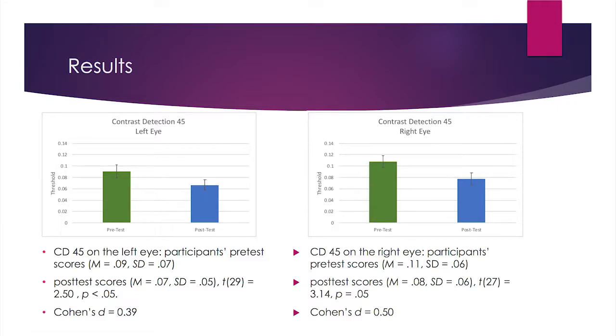These are what the results showed. As you can see, there was the left and the right eye, and there was pre- and post-test. Their threshold levels did go down. Remember, threshold level is the smallest amount of change required for you to notice a difference. So as they went from pre-test to post-test, they required less of a change to notice that there was a difference. Participants did show improvements in contrast detection as a result of the training — so the training was helpful for the participants.